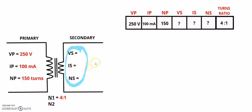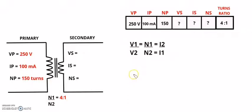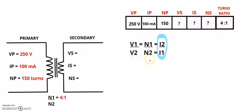The first thing we will calculate is the secondary voltage of the transformer. Before that, I want to show you what the transformer ratio formulas look like. We have the voltage ratio, the turns ratio, and the current ratio. These ratios are used together — for example, the voltage and turns ratio together, the voltage and current ratio together, or the turns and current ratio together.